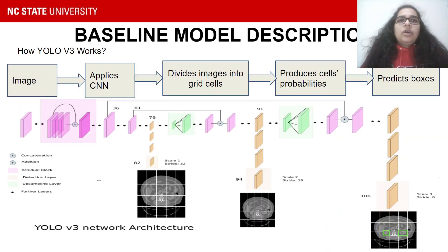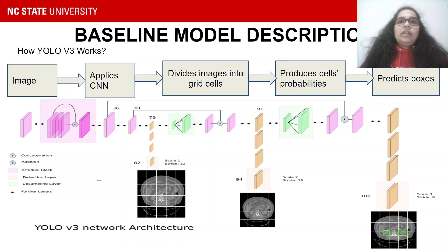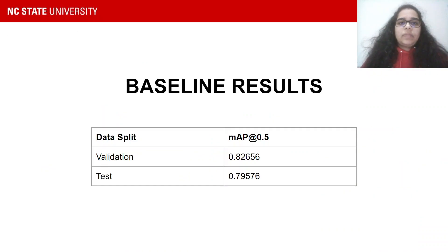The backbone of YOLO V3 is a network of 53 convolutional layers. Each layer is followed by a batch normalization layer and leaky ReLU activation. It also downsamples the images using a convolutional layer with stride 2 instead of pooling, which prevents the loss of low-level features. YOLO V3's backbone is first trained on ImageNet and the entire object detection model has been pre-trained on MS-COCO dataset. These are the baseline results that we achieved.